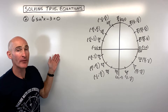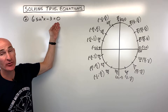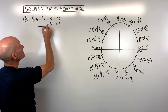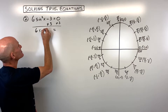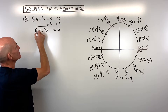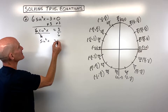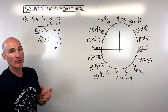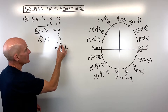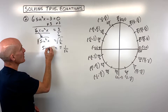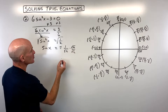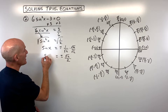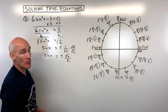For example number two, we have six sine squared x minus three equals zero. Working towards isolating the sine function, add three to both sides to get six sine squared x equals three, then divide both sides by six, giving sine squared x equals one half. Taking the square root of both sides gives plus or minus the square root of one half, which rationalizes to plus or minus square root of two over two.